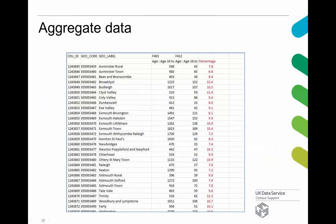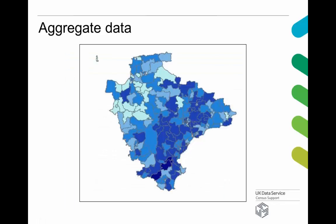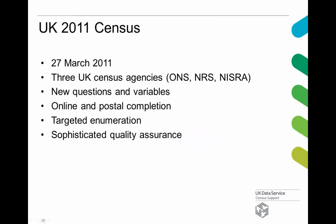You can also quickly convert that into a percentage. And that means if you have some GIS experience, you could create a map like this — you can visualize the data. This is a choropleth map for Devon showing all the different wards.